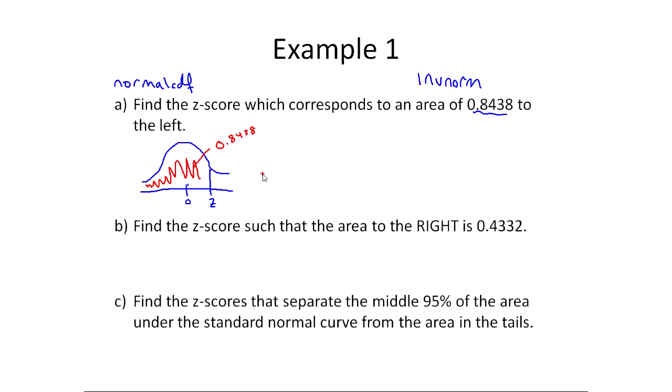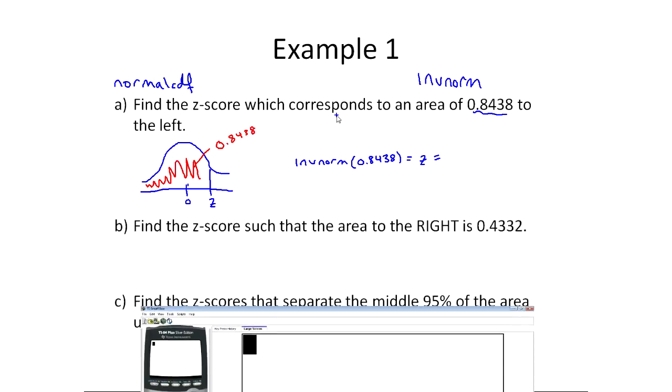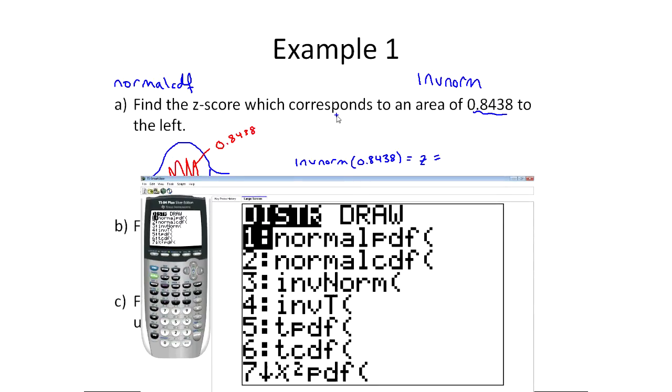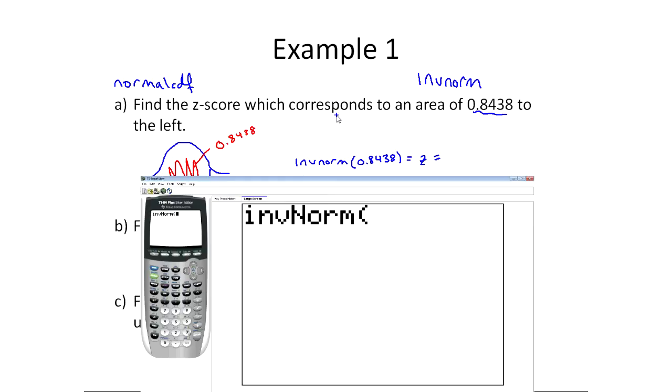What inverse normal does is it takes an area, and it only works with area to the left, takes an area to the left and gives you the z-score. So in this case, this would be inverse norm of 0.8438, nothing else. When I do this, I'll get z. On the calculator, this is under the same menu as normal CDF. I'm going to press the second DISTR button, and that'll get me into the distributions menu, and it's right at the top, inverse normal. Once I click that, I can just type 0.8438 and press enter, and I get a z-score of 1.01.